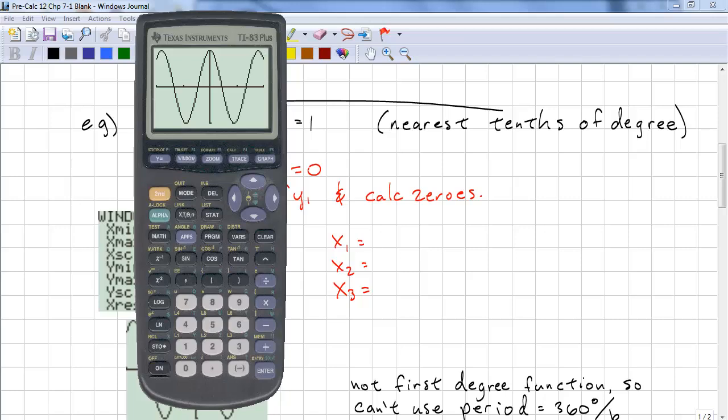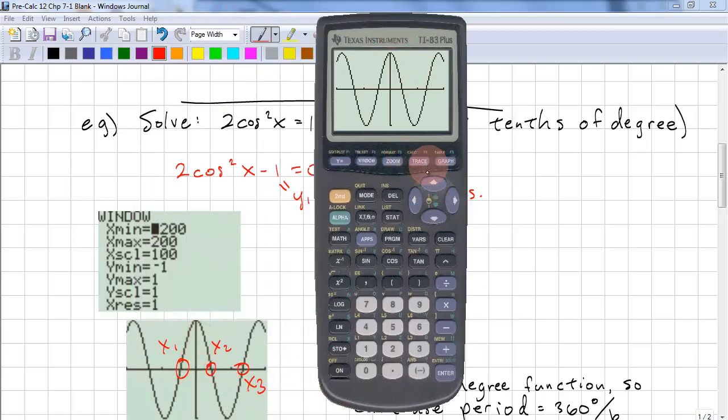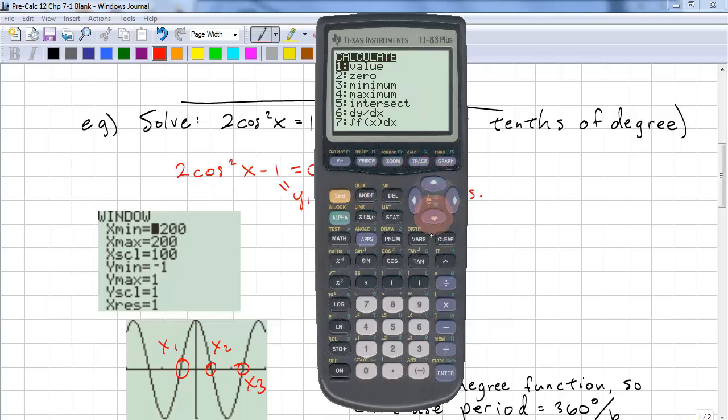You need to find 3 zeros: x1, x2, x3. I've shown that here. I will go through one example. I will find the zero there, and there.